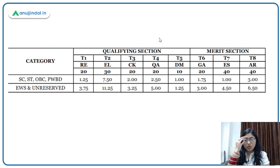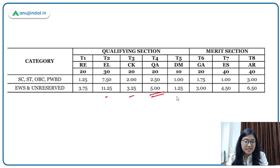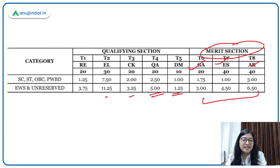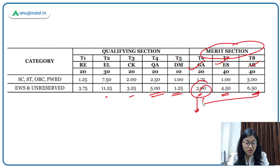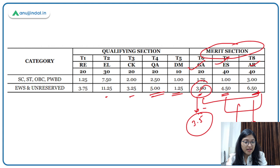In the qualifying sections, for the unreserved category the minimum cutoffs were: Reasoning — 3.75, English — 11.25, Computer — 3.25, Quantitative Aptitude — 5, and Decision Making — 1.25. In the merit section for GA, ESI, and ARD out of 100 marks, the cutoffs were also minimal — GA cutoff was only 3, ESI was 4.5, and ARD was 6.5. So even if you score as low as 3 in GA but score well in ESI and ARD, scoring 30 or 25 in ESI and 20 in ARD, you will clear the 53.5 cutoff.